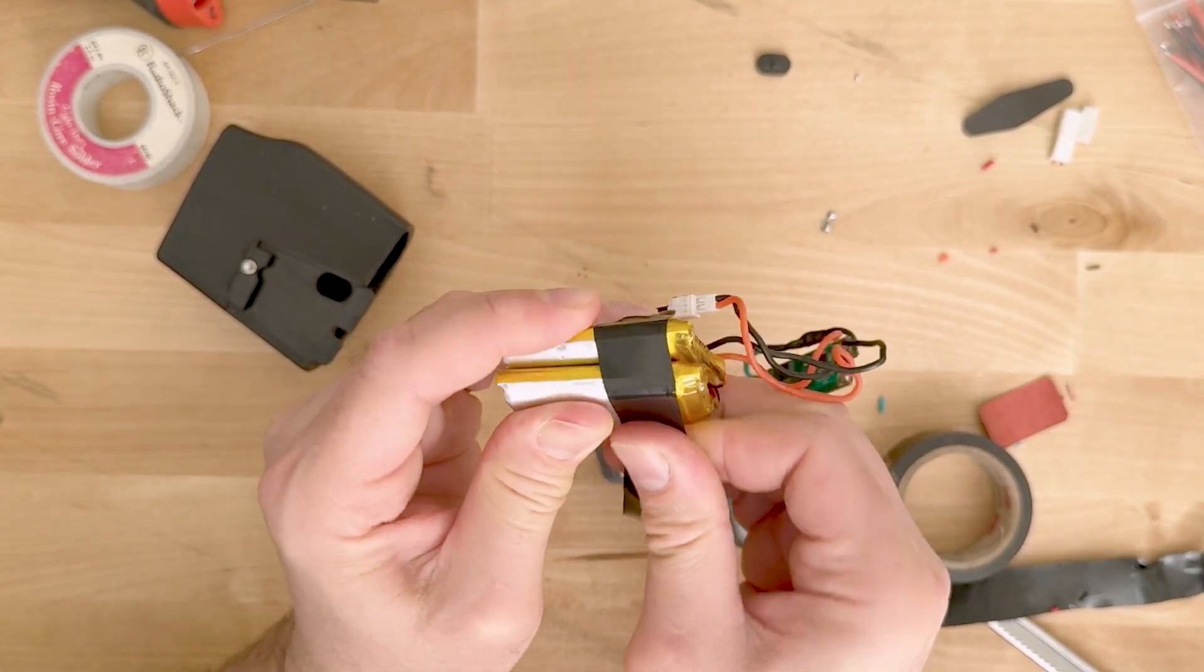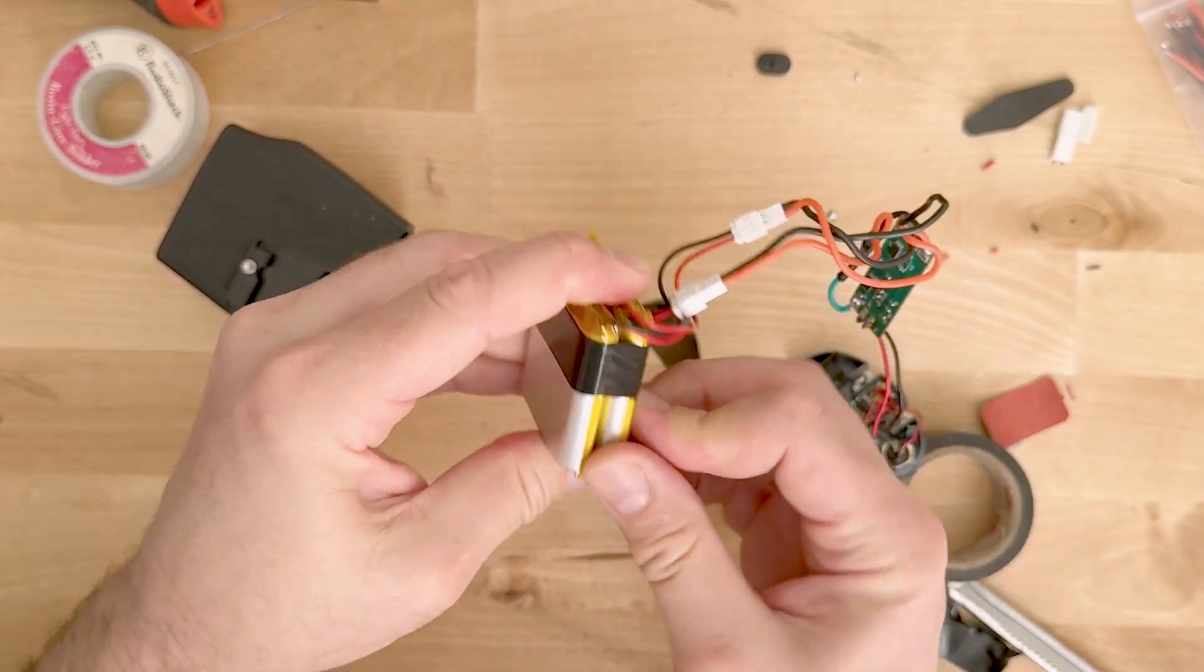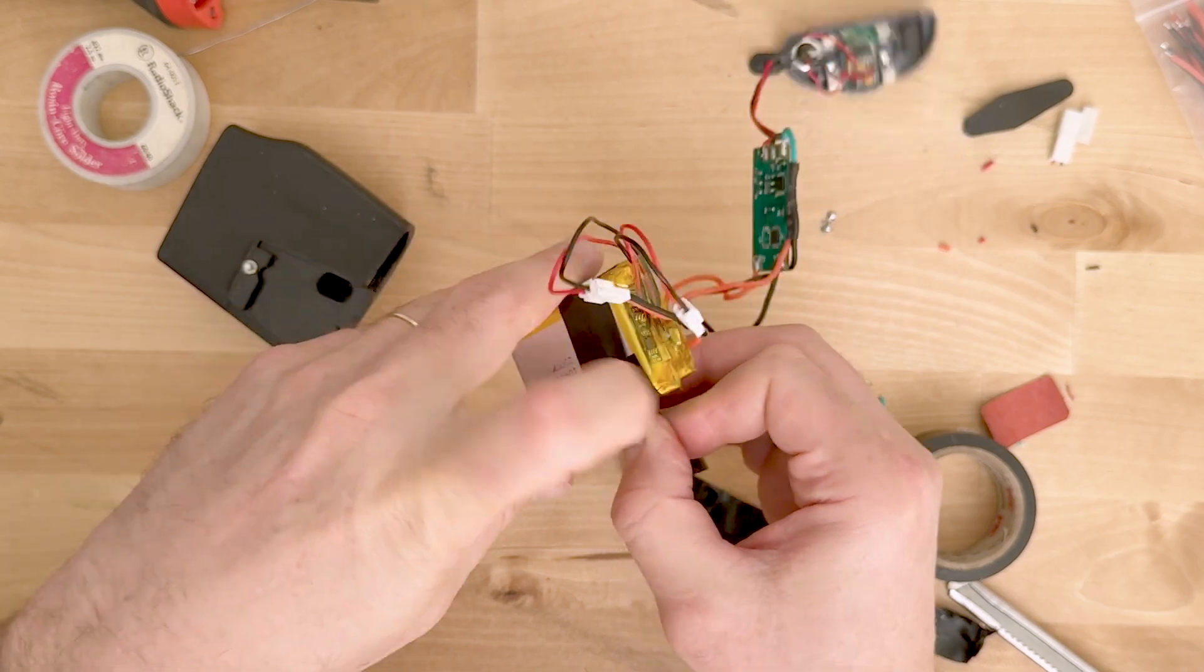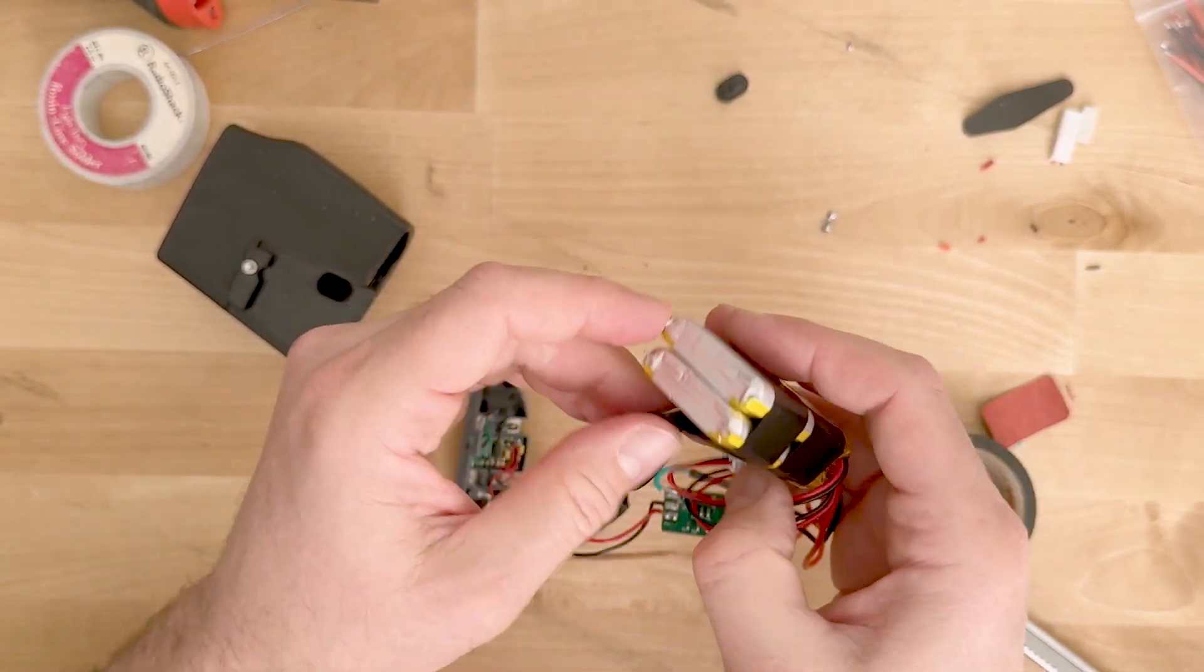And now we just need to pack everything up and put it back into the outer shell, the holder for the battery grip. And you just want to make sure your batteries are clean, tidy, nicely packed up.